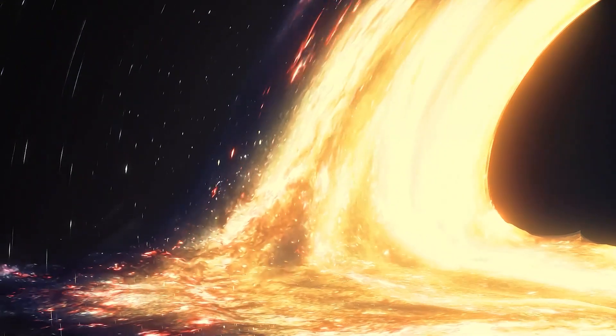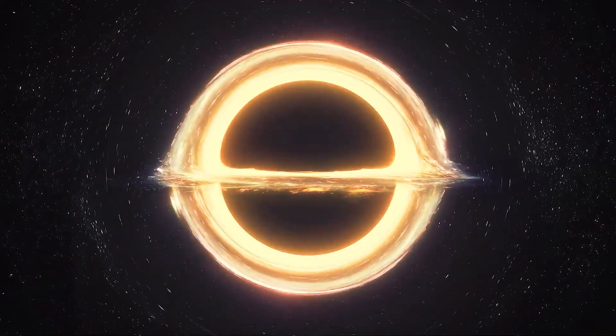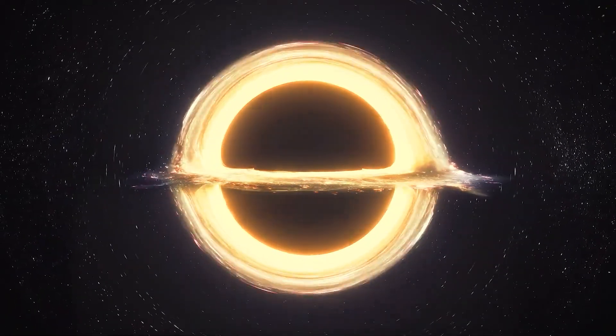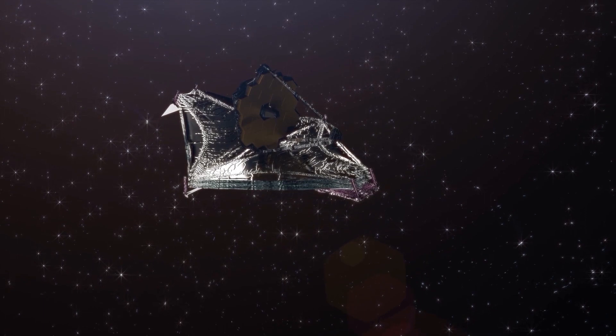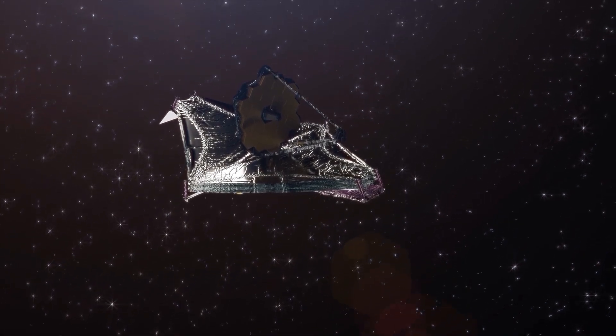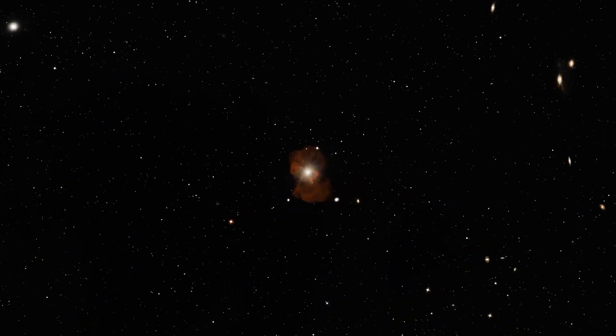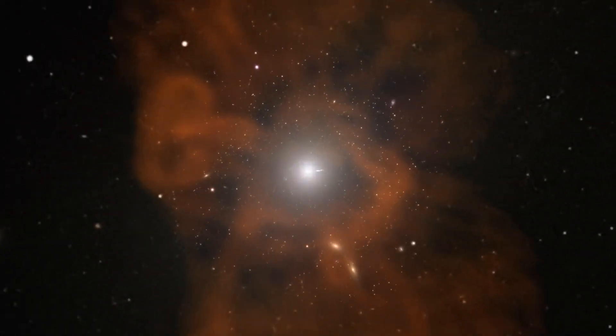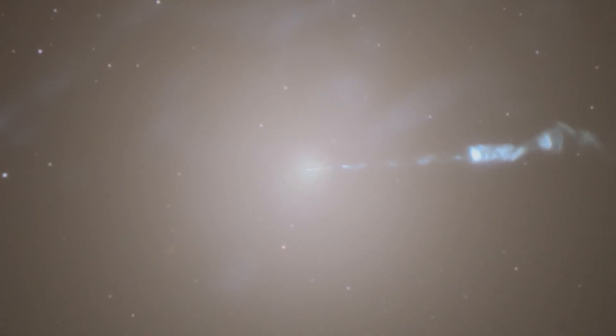As black holes pull in matter, they create an accretion disk, a swirling disk of particles encircling a black hole. JWST's infrared devices allow its telescope to examine the accretion disk in a more detailed view, providing scientists with new perspectives on how the particles behave as they fall into the black hole.